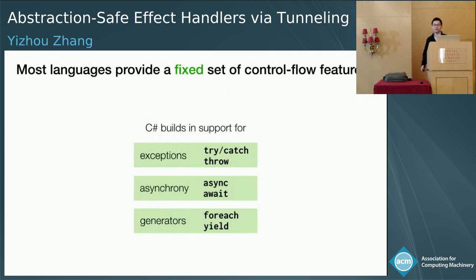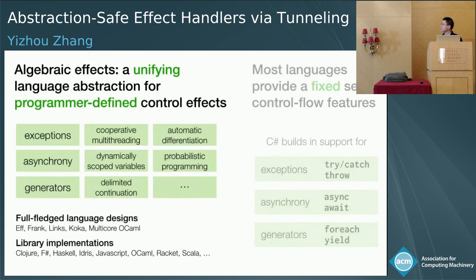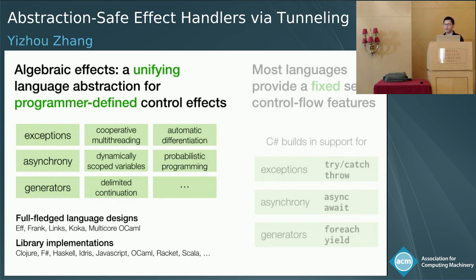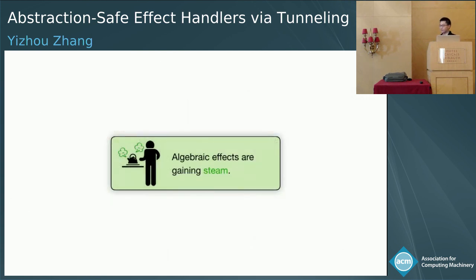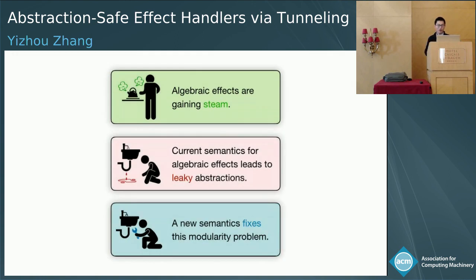Programming languages typically build in a fixed set of control flow features — for example, C# has support for exceptions, async/await, and coroutine iterators. Quite recently, algebraic effects have emerged as a unifying language abstraction that allows programmer-defined control effects. They subsume legacy control flow features such as exceptions, and bring numerous other possibilities. This generality has created growing interest from both the research community and industry, with full-fledged language designs and many library implementations.